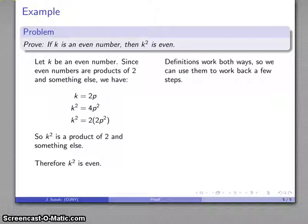And we'll do a quick check just to make sure our proof flows in the direction it should. I have to start here. I have to be able to end here. k is even. Product of 2 and something else. k is 2p. k squared is 4p squared. Do a little bit of algebra. k squared is the product of 2 and something else. k squared is even. And my proof is good.